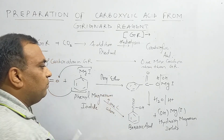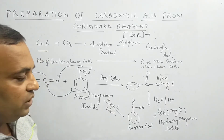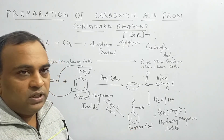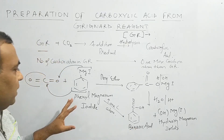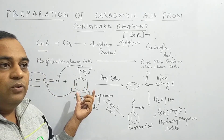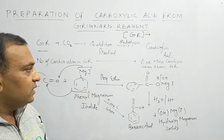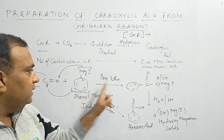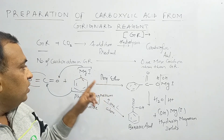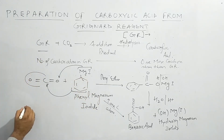This is a very important point to remember: when you react a Grignard reagent with CO₂, the number of carbon atoms in the carboxylic acid formed is one more than in the Grignard reagent. Also, the R group in the Grignard reagent can be either an alkyl group or an aryl group. And importantly, you must use dry ether in this reaction.